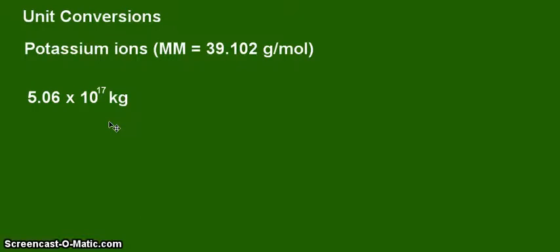So all we need to do here is convert this kilogram to grams using one conversion factor and multiply that gram into the molar mass to get the mole answer of potassium ions.